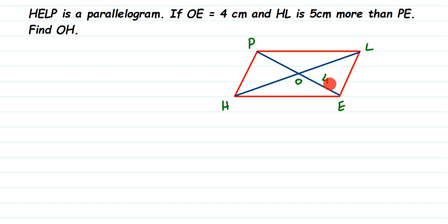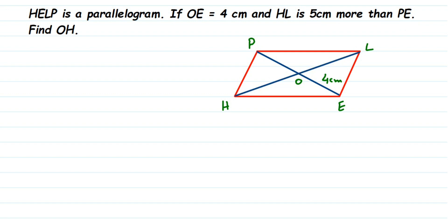HL is the whole diagonal length from one end to the other, and it is 5 centimeters more than PE. We need to find OH — just this portion of the diagonal HL. So we'll use the properties of the parallelogram, especially the diagonal property.